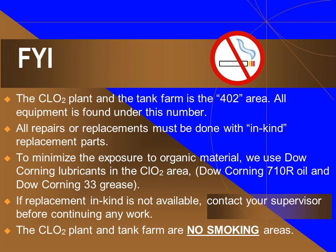For your general information, the chlorine dioxide plant and the tank farm are called the 402 area. All equipment is found under this number. All repairs or replacements must be done with in-kind replacement parts. To minimize the exposure to organic material, we use Dow Corning lubricants in the chlorine dioxide area — specifically, Dow Corning 710R oil and Dow Corning 33 grease. If replacement in-kind is not available, contact your supervisor before continuing any work. The chlorine dioxide plant and tank farm are no smoking areas.